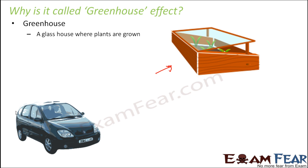Why? Because the glasses allowed the solar radiation to enter inside the car. When solar radiation entered, the seats and everything inside became hot. They emitted infrared radiation. But the infrared radiation was not allowed to escape out through the glass, so all the heat got blocked inside the car and the temperature inside increased a lot. This greenhouse effect can also be seen inside a locked car.